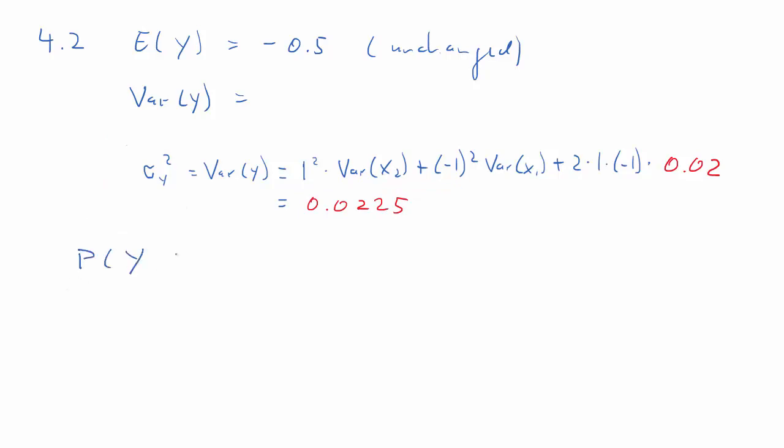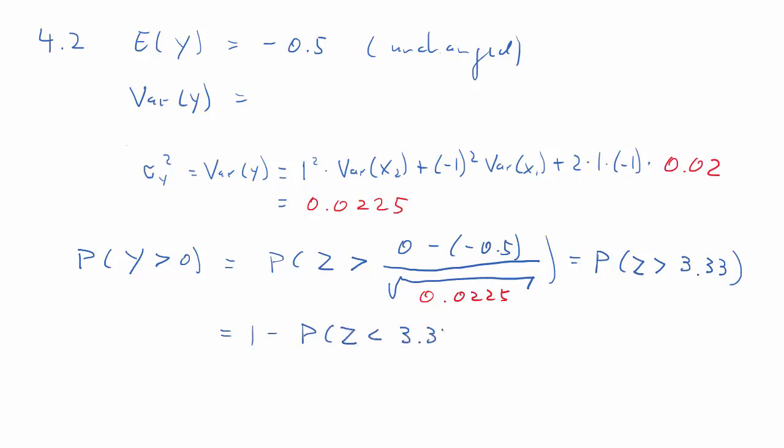So let's recalculate the probability that Y is larger than 0. That was the case of an unusable syringe. We again perform our standardization. It's the same. It's just that the variance we're going to use is changing. It's smaller, actually, the variance, due to the positive covariance. So we are looking for the probability that Z is larger than 3.33, or 1 minus the probability that Z is smaller than 3.33. If you go to the normal table, you may not find that value, because it's so far in the tail that basically the probability is 1, and therefore the probability that Y is larger than 0 is approximately 0, and therefore we are almost certain that all syringes are usable.